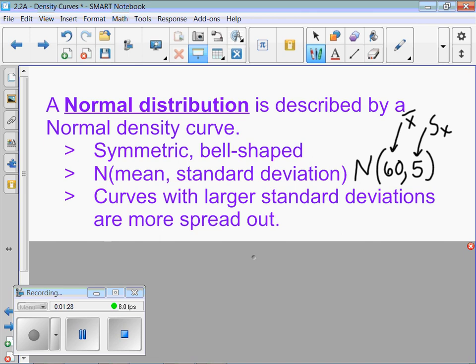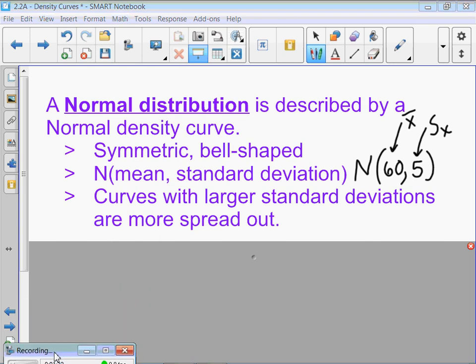Some examples of things that are normally distributed. One in particular that applies to your life is the SAT. They actually calibrate it every year. So, if there happens to be a test that's harder, they're going to go ahead and change and alter the scores. It's still going to be a normal bell-shaped curve.